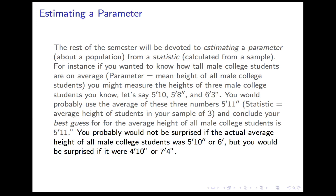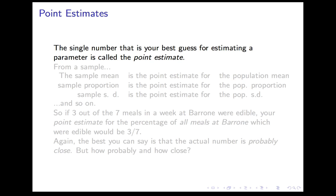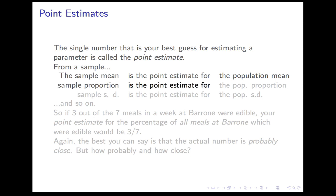We just want to think about how to express that idea. That single number which is your best guess for estimating a parameter is called a point estimate. The sample mean is the point estimate for the population mean — your best guess, based on a sample, as to what the population mean is, is whatever the sample mean is. Likewise, the sample proportion is the point estimate for the population proportion, and the sample standard deviation is the point estimate for the population standard deviation, and so on.